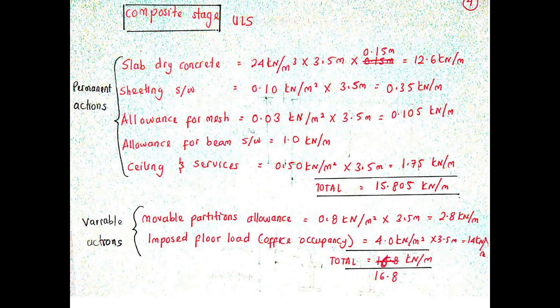Next, let's calculate the design actions at composite stage for permanent and variable actions. The total permanent and variable actions are 15.805 kN/m and 16.8 kN/m respectively.